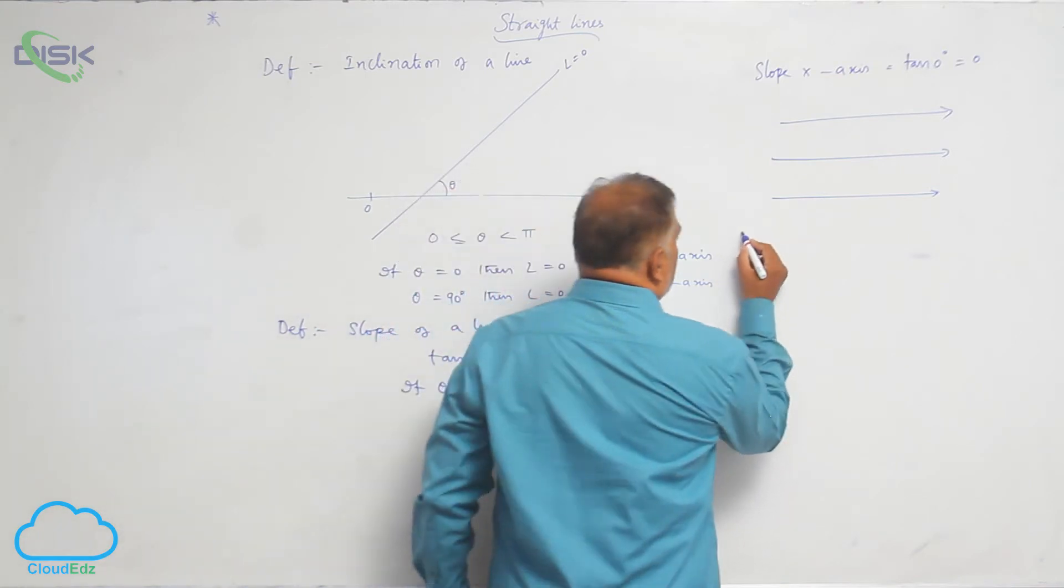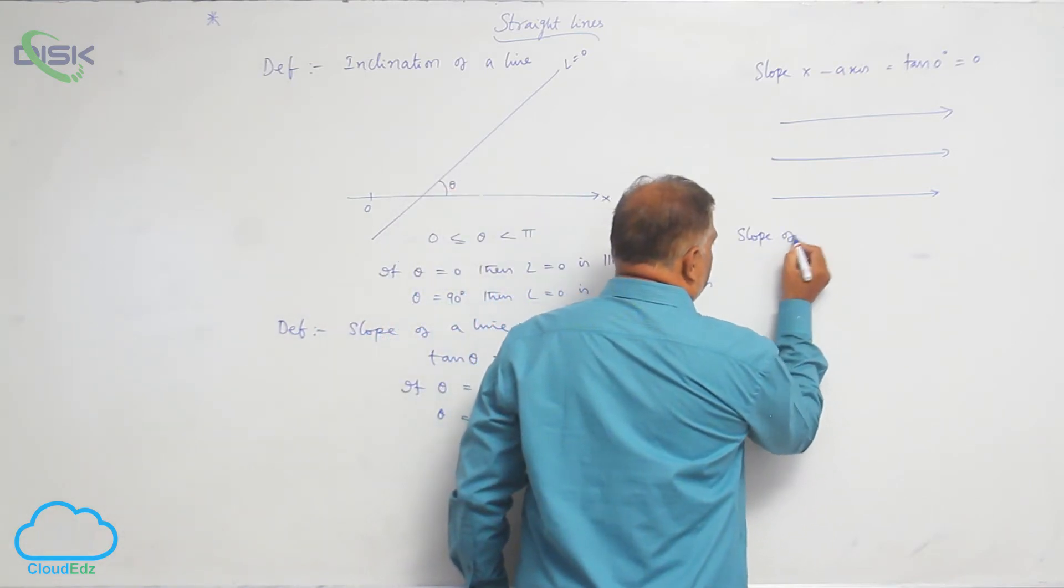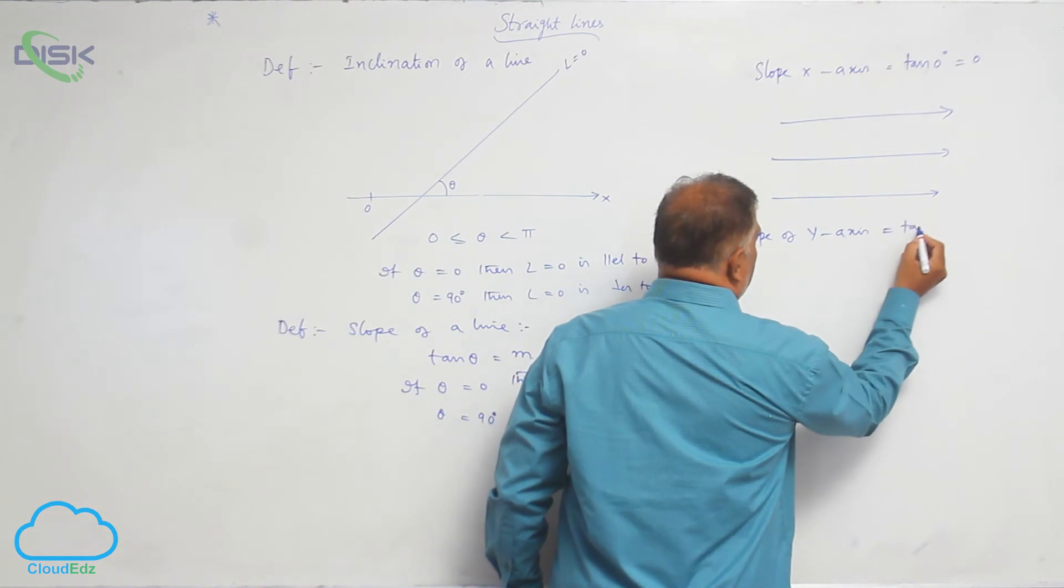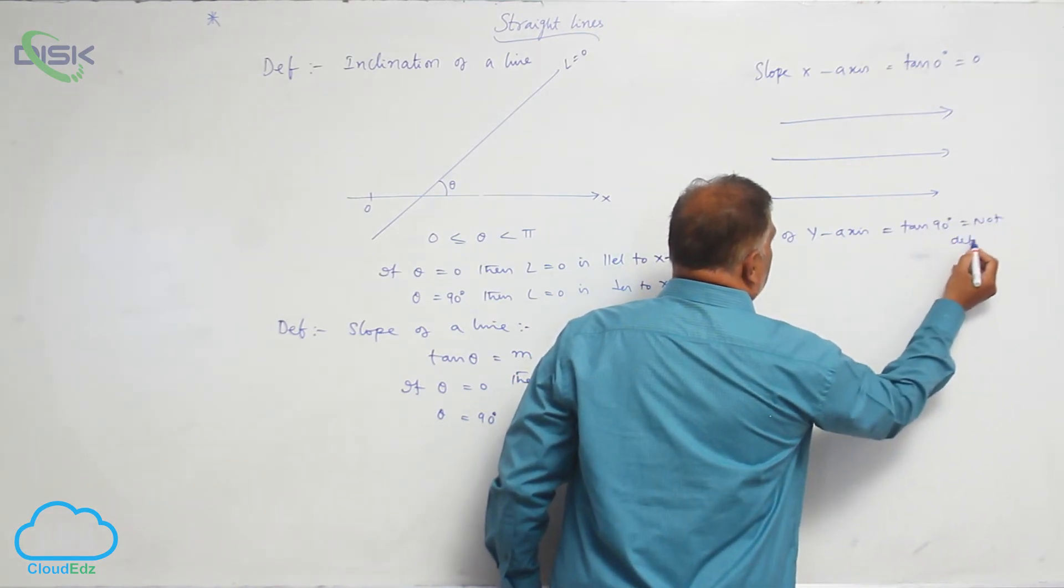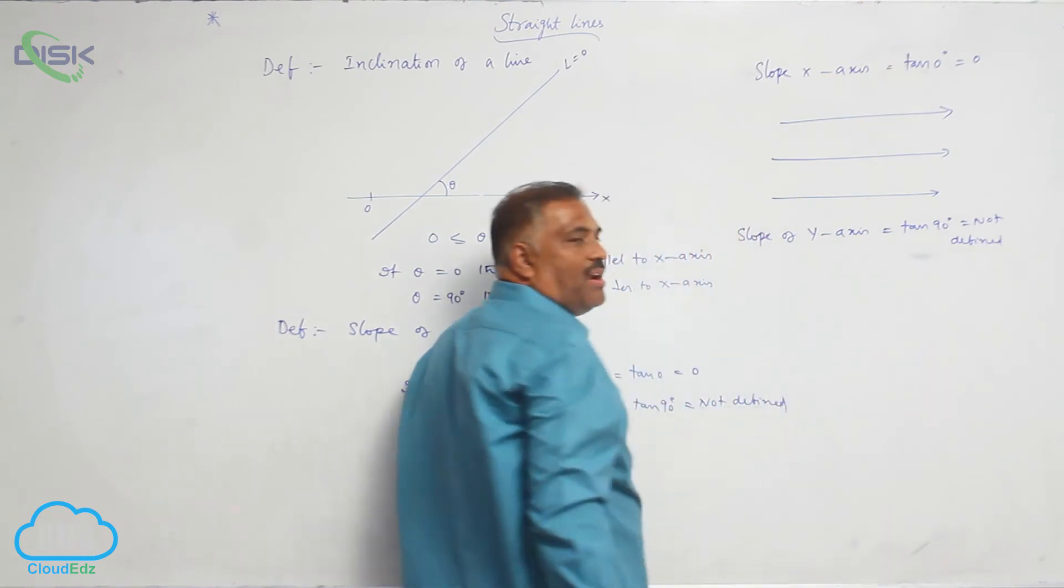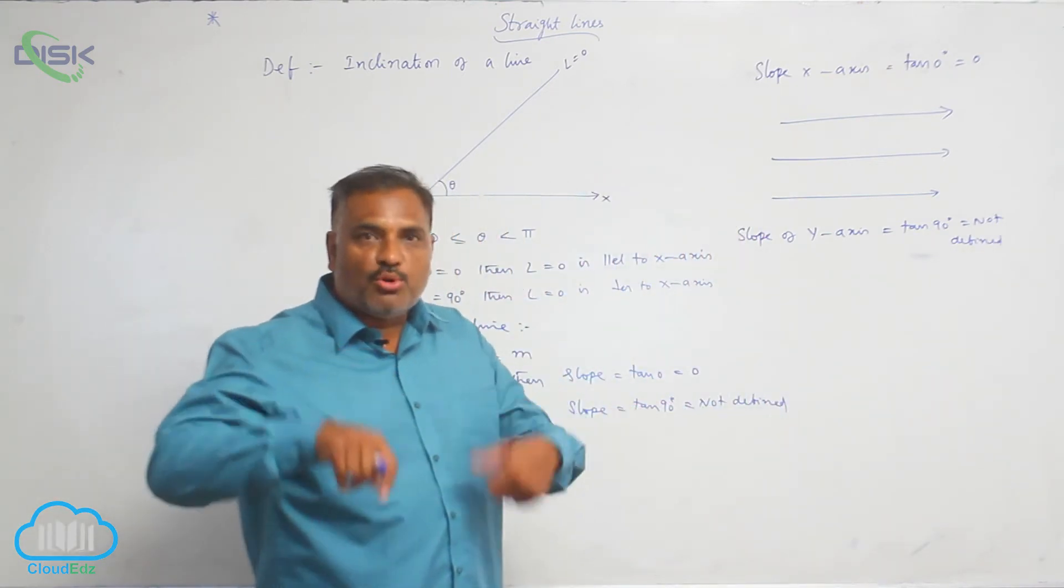Now slope of y-axis is given by tan 90, that is not defined. So slope of y-axis is not defined means we can conclude one more point.